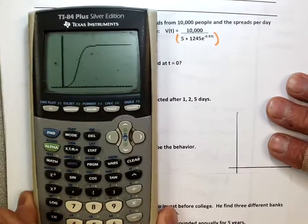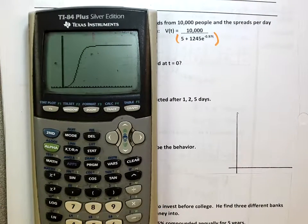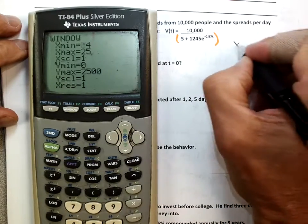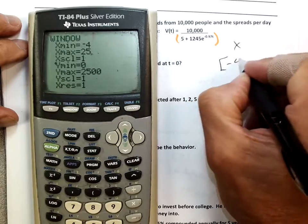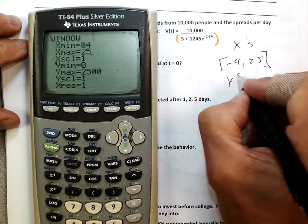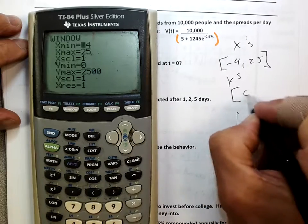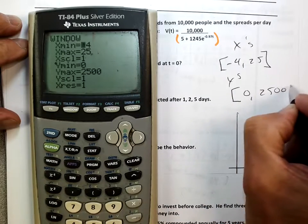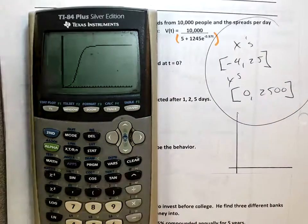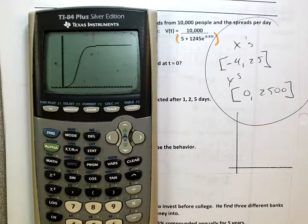Everybody with me? So, watch. If I look at this darn thing, check my window out and I'll write it on the board here. Here's my window. I went on my X's, I went from negative 4 to 25. And on my Y's, I went from 0 to 2,500. And there's my window. And then this is the graph I got. Now, tell me about that graph. What do you see?